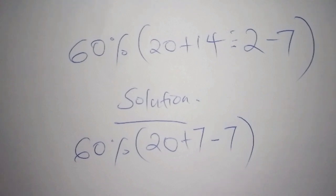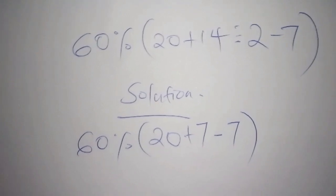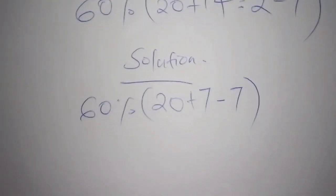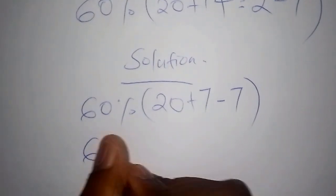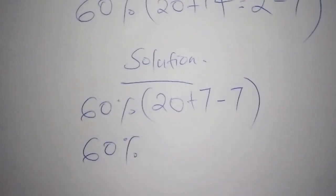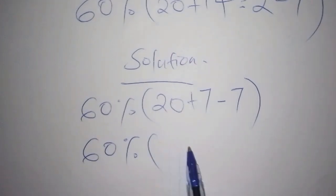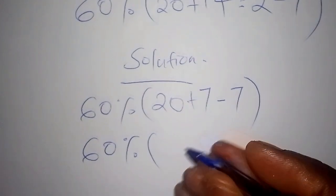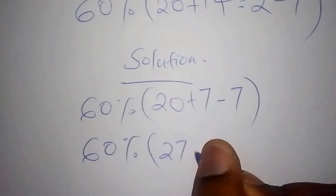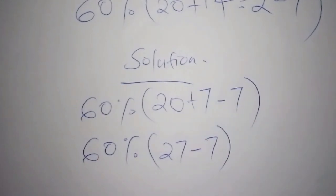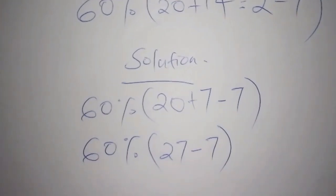Our second step: we still have 60 percent into bracket. We have to add now 20 plus 7, that is 27, minus 7, then we close the bracket.